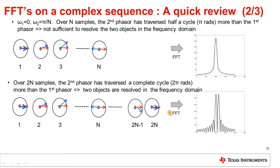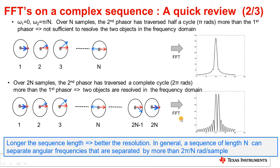Here you have the same two phasors but now observed over a longer time period — 2N samples instead of N samples. Over these 2N samples, the second phasor has traversed a full additional cycle compared to the first phasor, and as you can see, the two frequencies are now clearly resolved in the frequency domain. The takeaway is: the longer the sequence length, the better the resolution. In general, a sequence of length N can separate angular frequencies that are separated by more than 2π/N radians per sample.